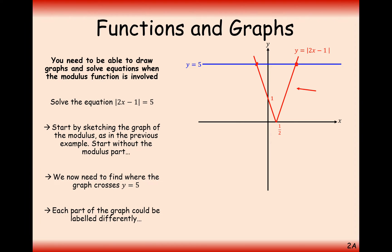The right-hand side of the modulus graph is the standard 2x minus 1 graph. The left-hand side is the reflected graph, which has a downward slope, so it needs a negative gradient. If we expand the brackets it has a y-intercept of 1, so it's the minus of 2x minus 1. The reflected line is the negative of whatever is inside the brackets. For solution A on the right-hand side, we solve 2x minus 1 equals 5. Add 1 to the other side, divide by 2, and we get x equals 3.